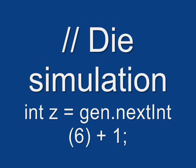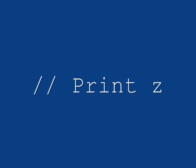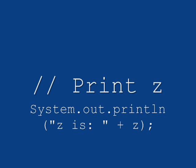The next line of code you'll add is the die simulation. So add a comment with die simulation, and underneath that comment, add the line of code int z equals gen.nextint, open parenthesis 6, close parenthesis, plus 1. And of course, we want to see the results of this random number generation, so next line of code should print z.